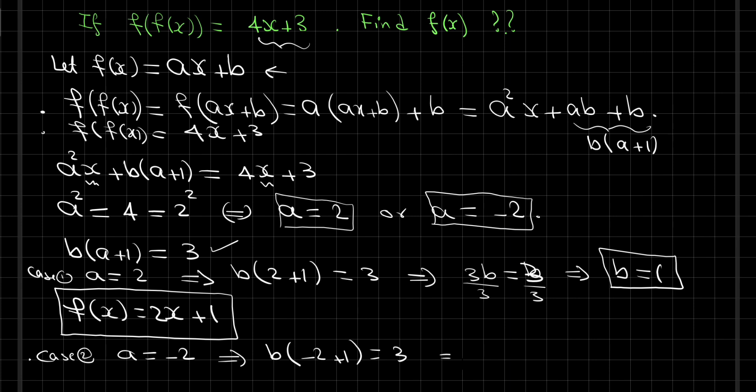This implies negative 2 plus 1 is negative 1, so negative b equals 3, which implies b equals negative 3.